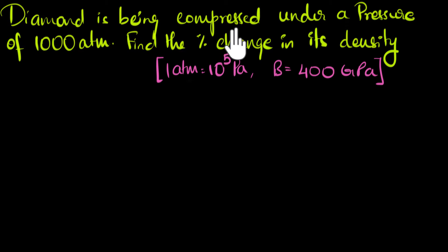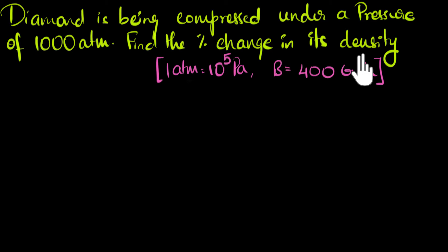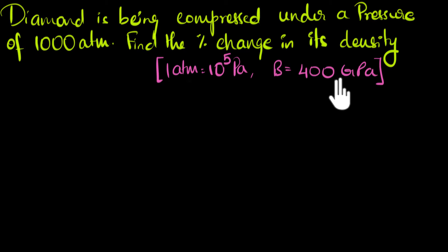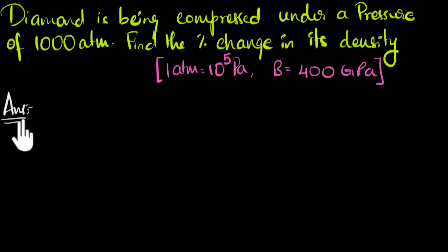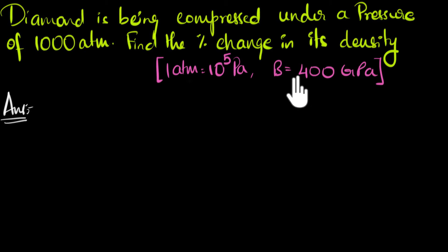Diamond is being compressed under a pressure of 1000 atmospheres. Find the percentage change in its density. Given that one atmosphere equals 10 to the power 5 pascals and the bulk modulus of diamond is 400 gigapascals. The first thing we'll do is gather the data. We are given pressure and the bulk modulus, so we can pretty much guess we're dealing with bulk stress and bulk strain.